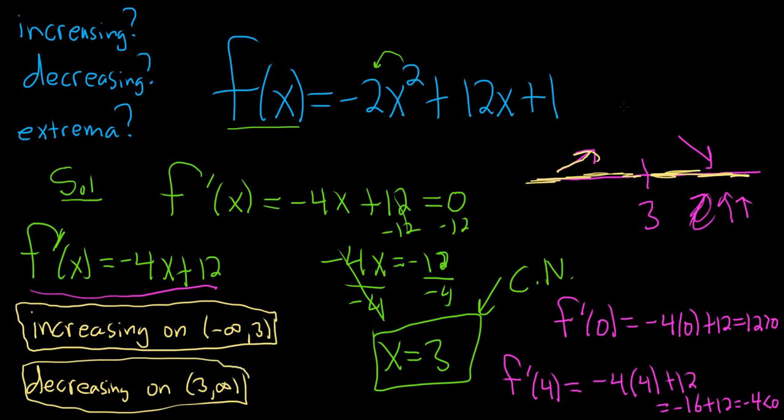The question also wants extrema. So if you just draw what's happening, you can usually figure it out. Let's see. So it's increasing, increasing, increasing. Then it's 0. And then it's decreasing, decreasing, decreasing. Oh, look. We have a maximum.